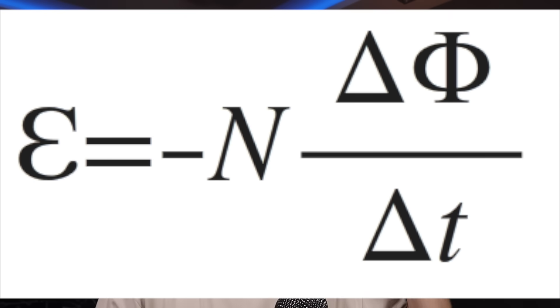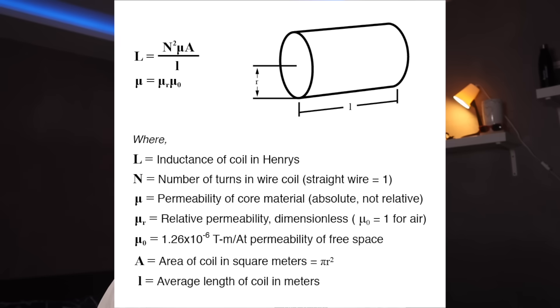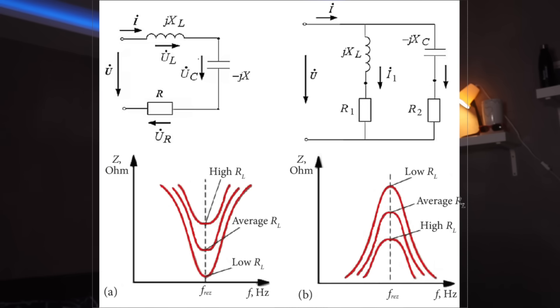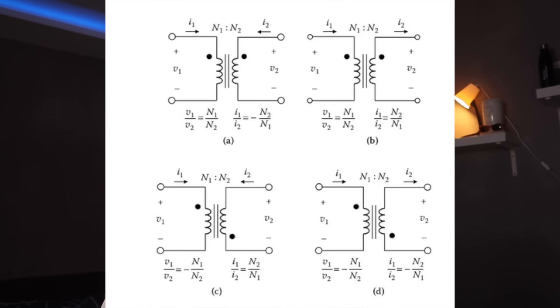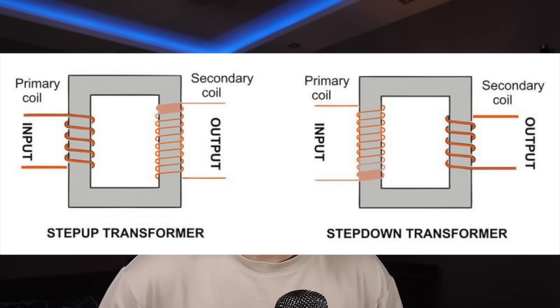We had classic electromagnetic induction — Faraday's law and Lenz's law. Inductance and reluctance were also there, and there was series and parallel resonance. The final big part of electrical science was transformers — step-up, step-down, ideal dot conversions, all part of transformers.